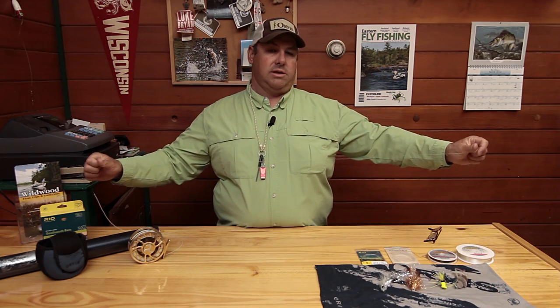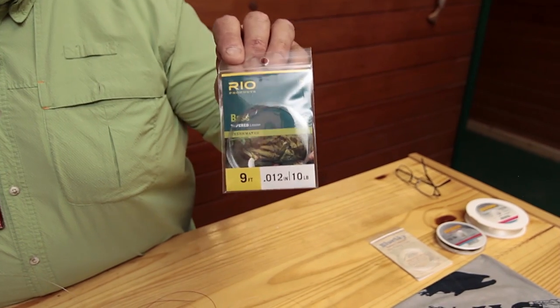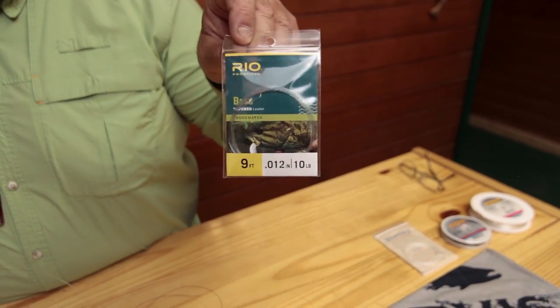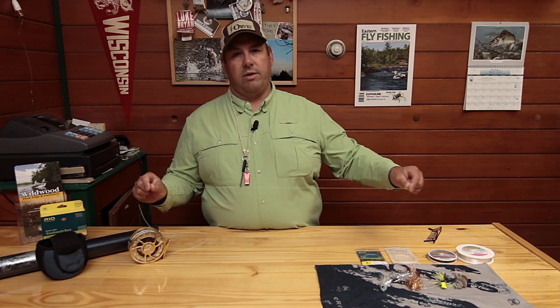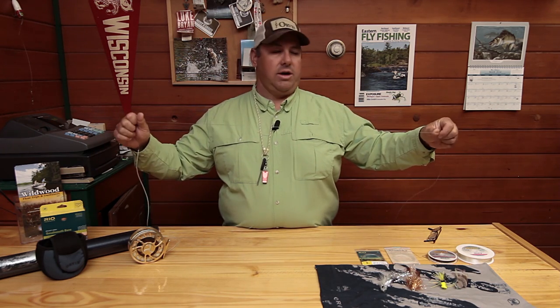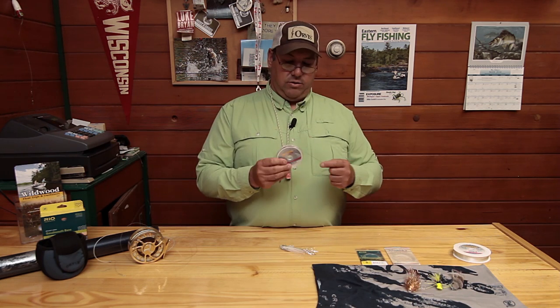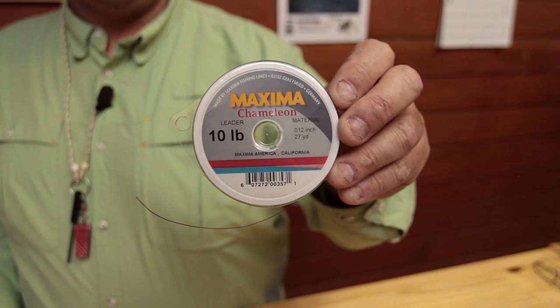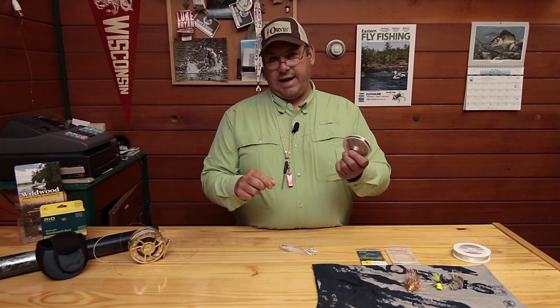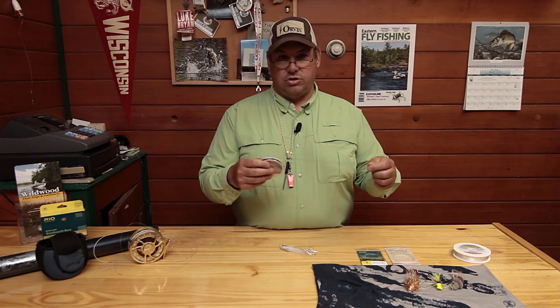I use just basically a nine foot, ten pound bass leader and the reason I use the bass leader is because of the heavy butt section. It'll turn over your big fly a lot easier, especially when that wind starts to blow on our bigger rivers in the North. I'll just use my leader fresh out of the bag. I won't put any tippet on it right away. If I do get down to the tippet I'll use a ten pound Maxima Chameleon. It's brown in color so in our tannin stained waters here in the North, it virtually disappears.